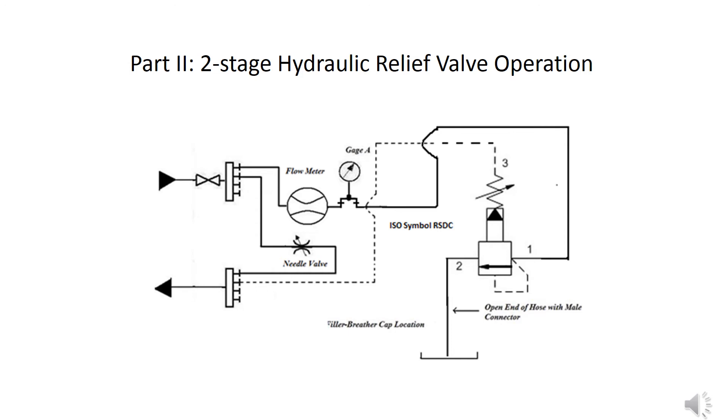The point of this experiment is to determine the cracking pressure of the valve. Now, I've said that we've set it at 400, but what's the cracking pressure? Well, that's a value that occurs below 400. In other words, before this valve sees a pressure of 400 psi, it will actually begin to open. And this is why we have a hose connected to the filler breather cap, so that we can witness the moment of opening. When that happens, a small trickle of oil will begin to come out of the hose.